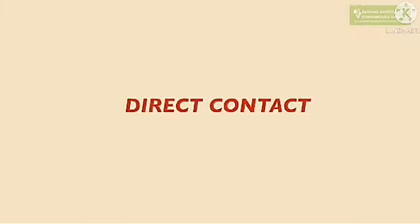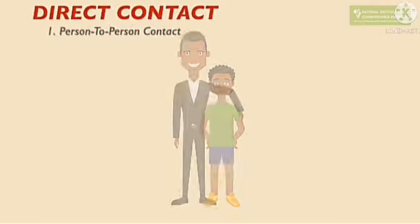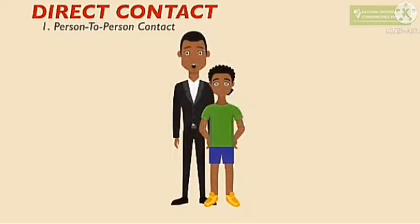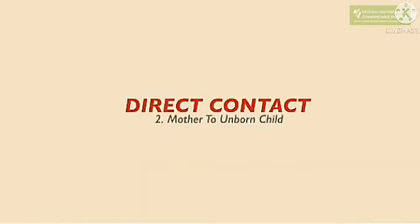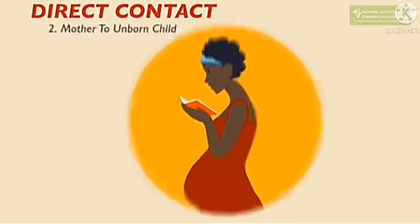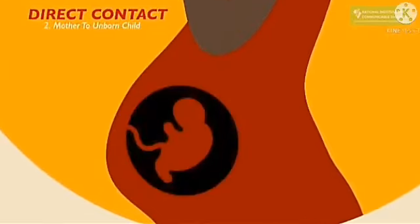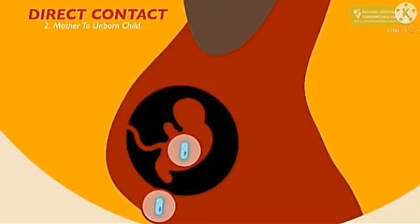In direct contact, the victim or patient must be in contact with the infected person — they will have to be in close contact. This can also be spread through sexually transmitted diseases, or from a mother to the unborn child through the umbilical cord to the baby. This is another form of direct contact.